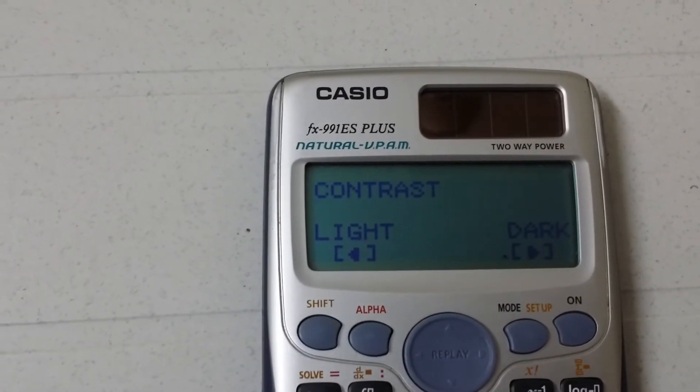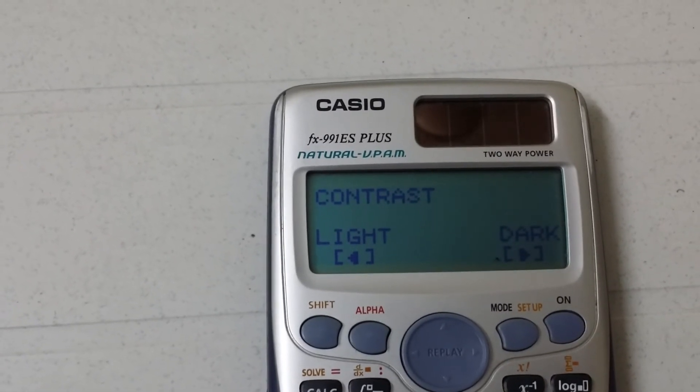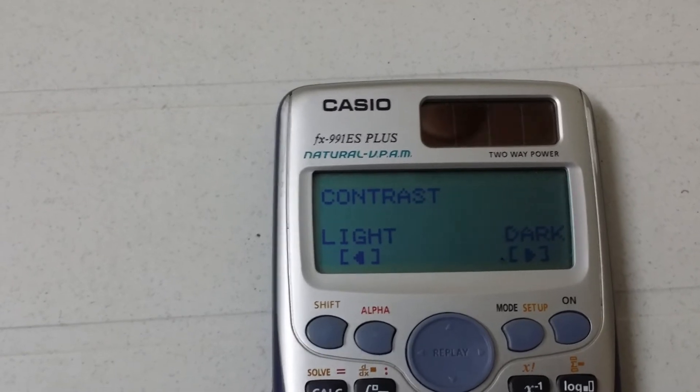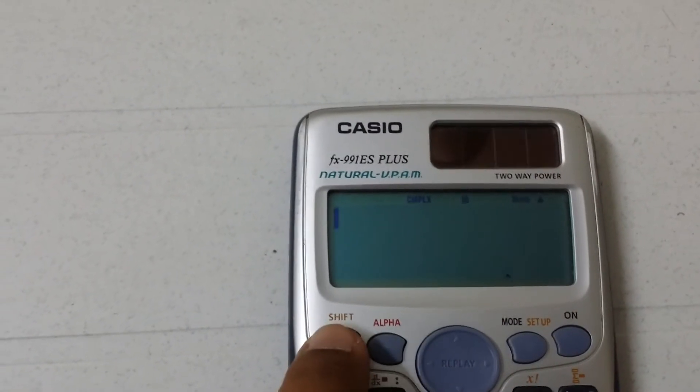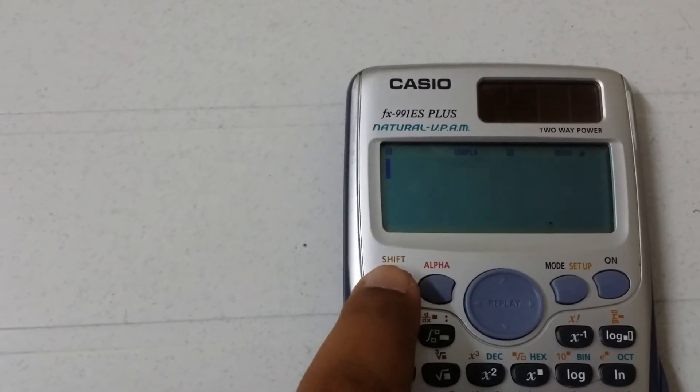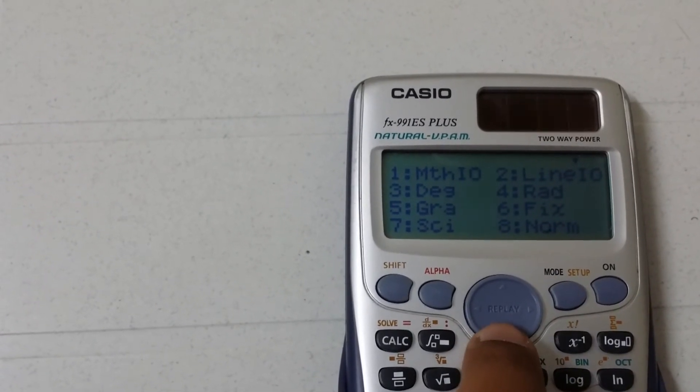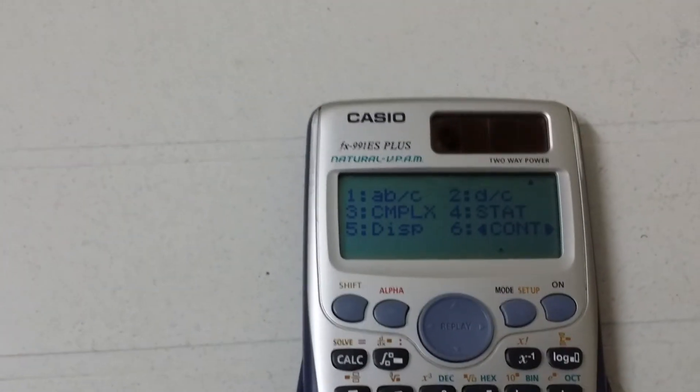Okay, I'm going to show you the contrast option. I mean how I can make this screen lighter or darker. You can see, you press shift and mode, press the down button, and press 6. Six means contrast option.